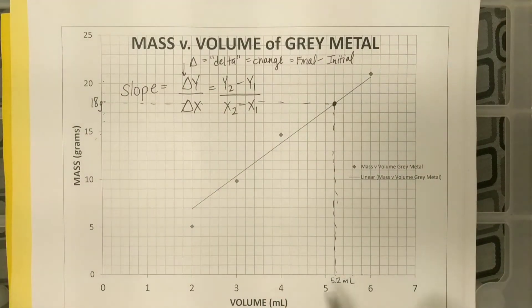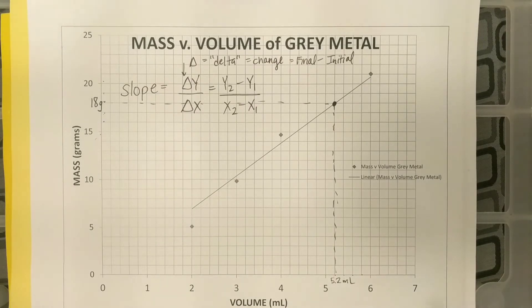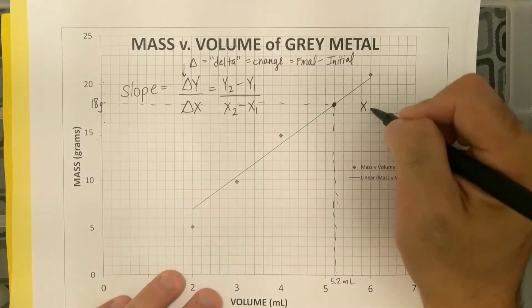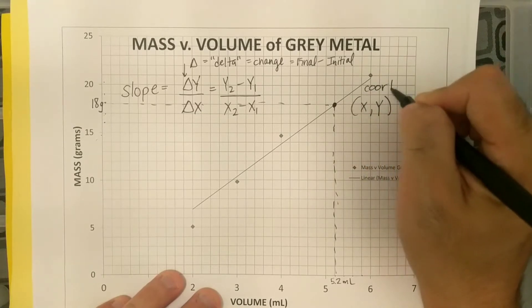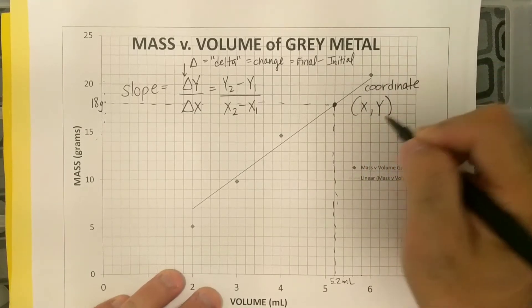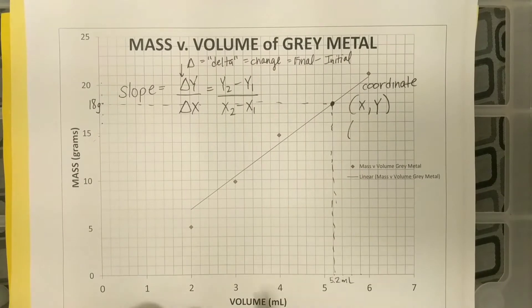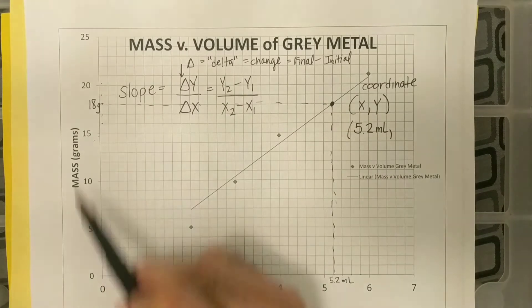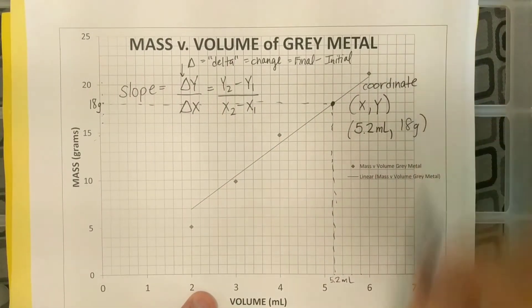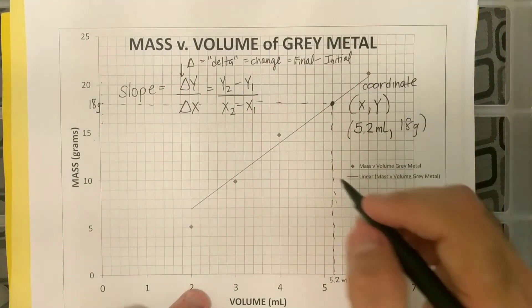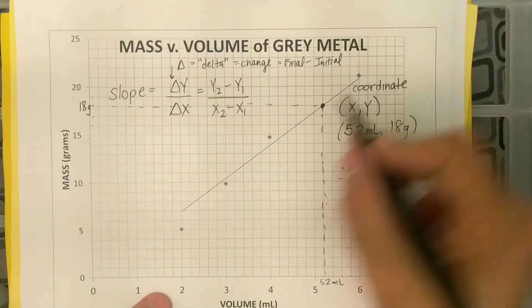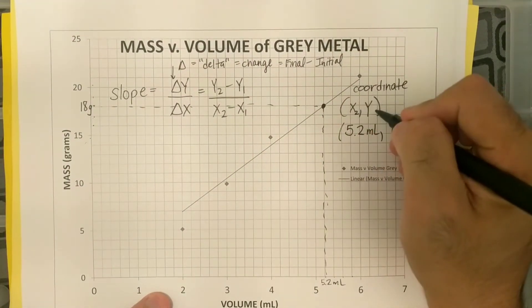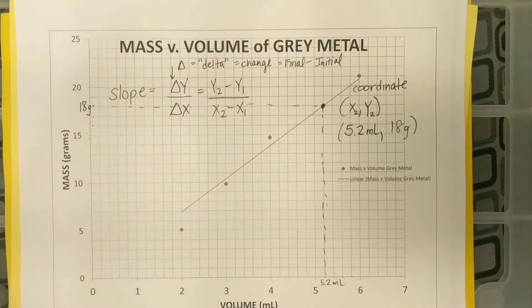And if you need help with how to figure out markings in between measurements, let me know that's something a little bit different. Anyway, so I have what I'm going to consider one coordinate, right? And remember, we write coordinates x, y, a coordinate is an x value comma y value. So my x value was 5.2 milliliters, and my y value was my 18 grams. Let's call these x2 and y2, because this is higher up. I'm going to try and find one that's lower.